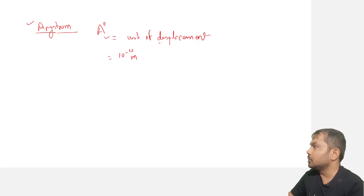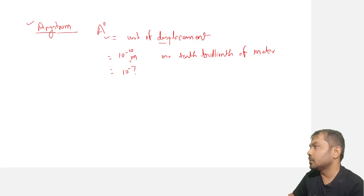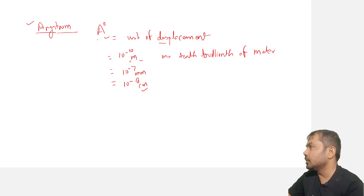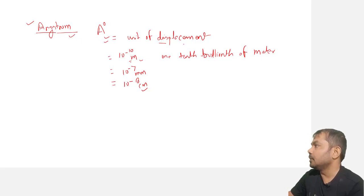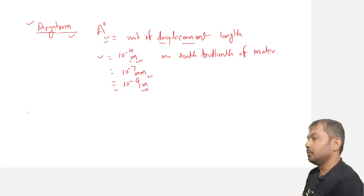The Angstrom is a unit of displacement or distance. You can say it as one tenth billionth of a meter, or 10 to the power minus 7 millimeter, or 10 to the power minus 8 centimeter. In conclusion, the Angstrom is a unit of displacement or length equal to 10⁻¹⁰ meter, 10⁻⁷ millimeter, or 10⁻⁸ centimeter.